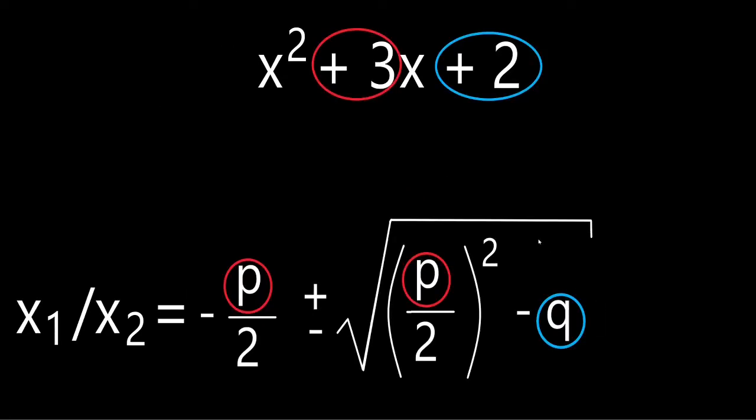And now all we have to do is insert the relevant elements into the PQ formula. The coefficient of the x here is the P. And the number at the end, where there is no x, is the Q.